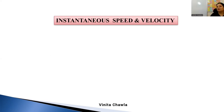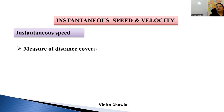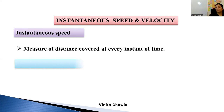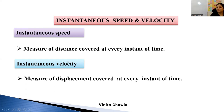Instantaneous speed and velocity — instantaneous means at a particular instant of time. When we drive a car, on the speedometer we can see the speed of the car. The speedometer gives the instantaneous speed of the car — the speed at that particular point of time. Instantaneous speed is the distance covered at every instant of time, and instantaneous velocity is the displacement covered at every instant of time. Distance is scalar, so is speed; displacement is a vector quantity, so is velocity.